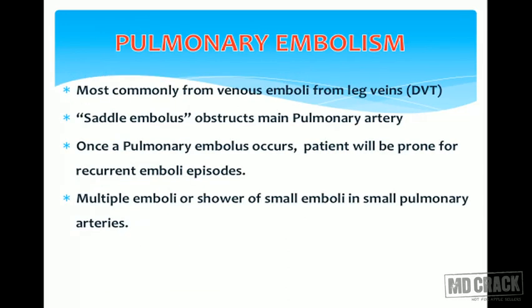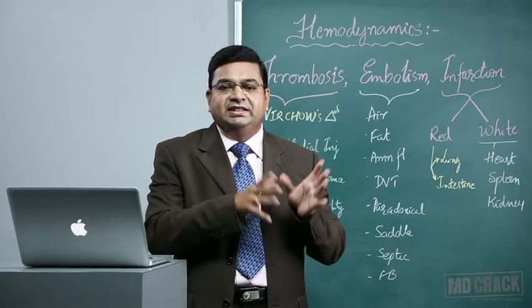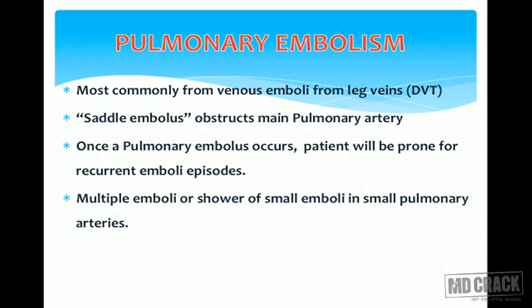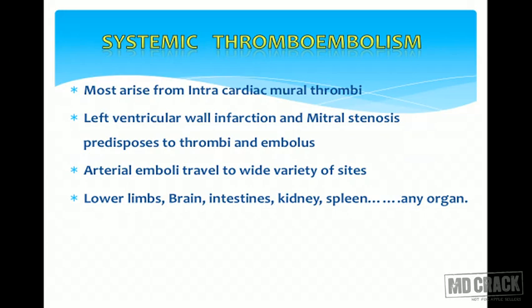Pulmonary embolism arises very commonly from deep venous thrombosis, where stasis of blood in leg veins predisposes dislodgement of an embolus that obstructs the main pulmonary arteries — such an embolus is called a saddle embolus. Once pulmonary embolism occurs, the person is very prone to recurrent embolic episodes. Systemic thromboembolism very commonly arises from intracardiac mural thrombi; left ventricular wall infarction is the most common cause. Mitral stenosis patients are also very prone to systemic thromboembolism.